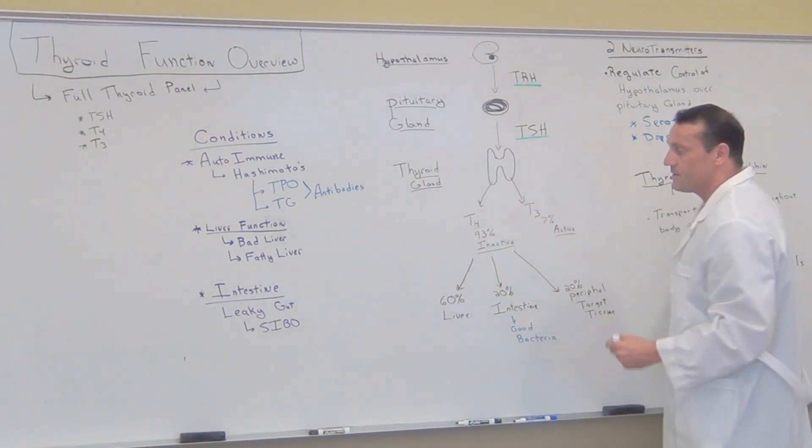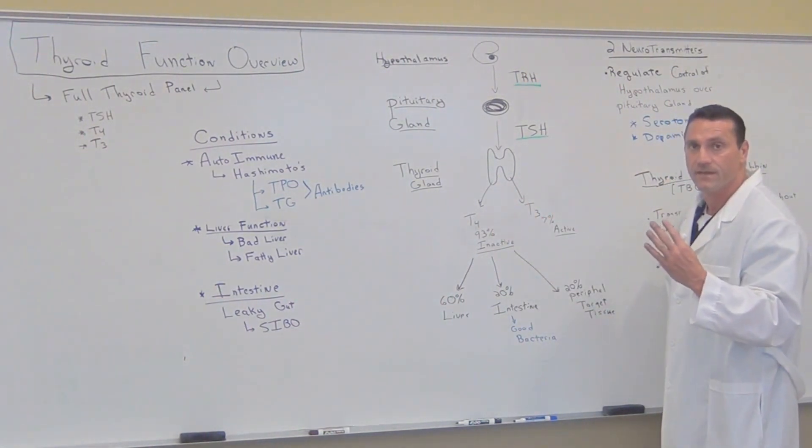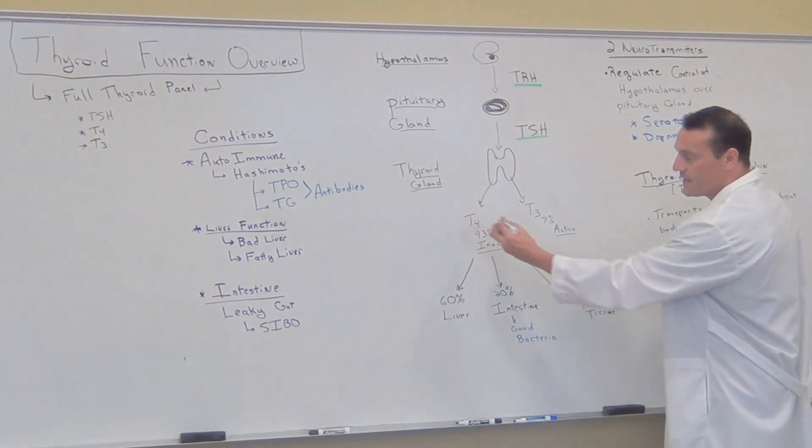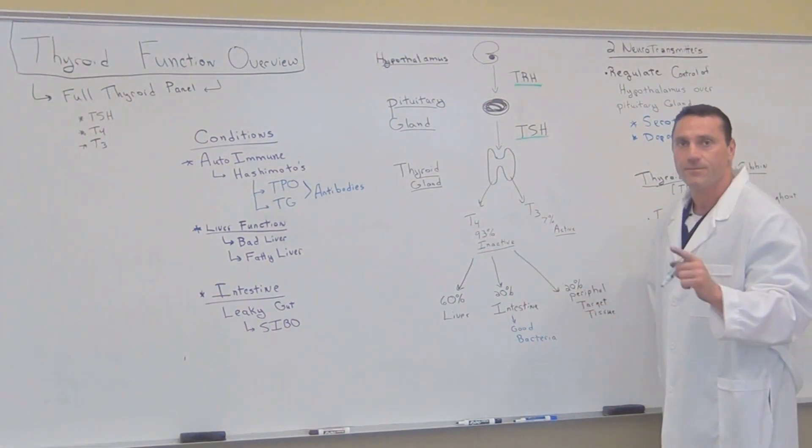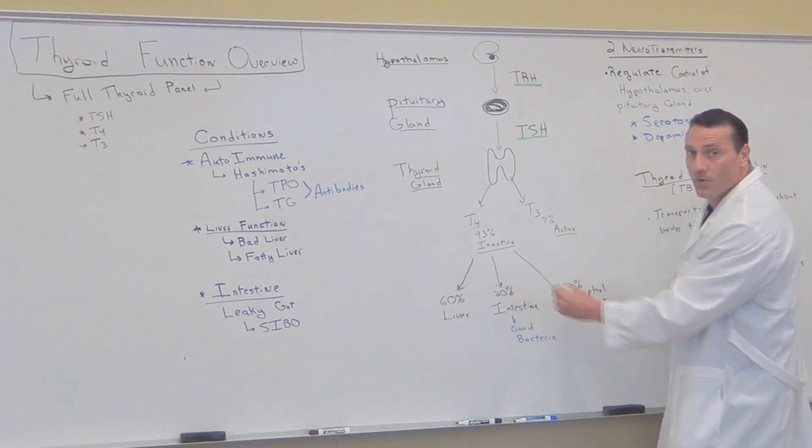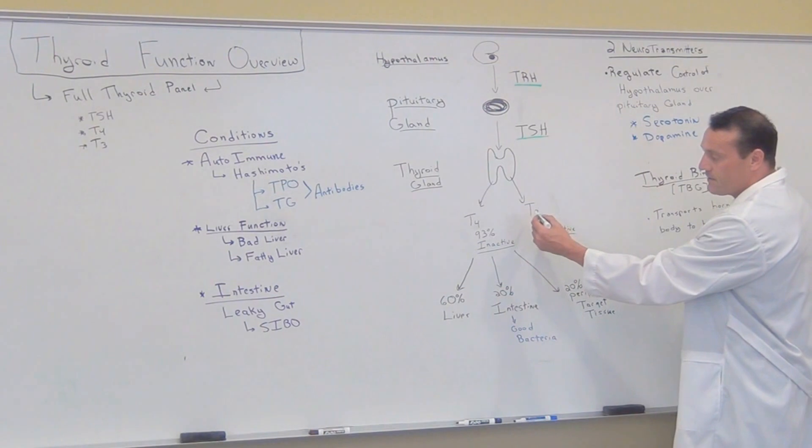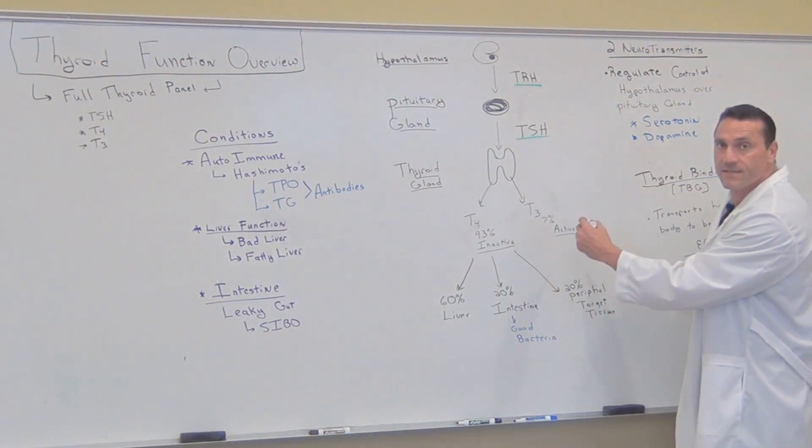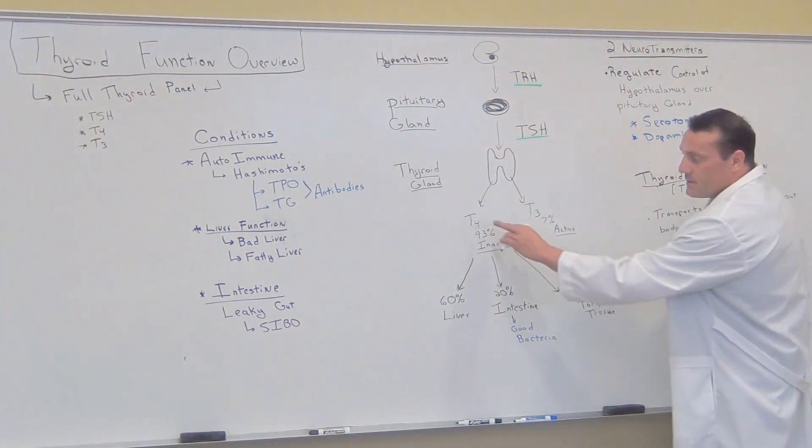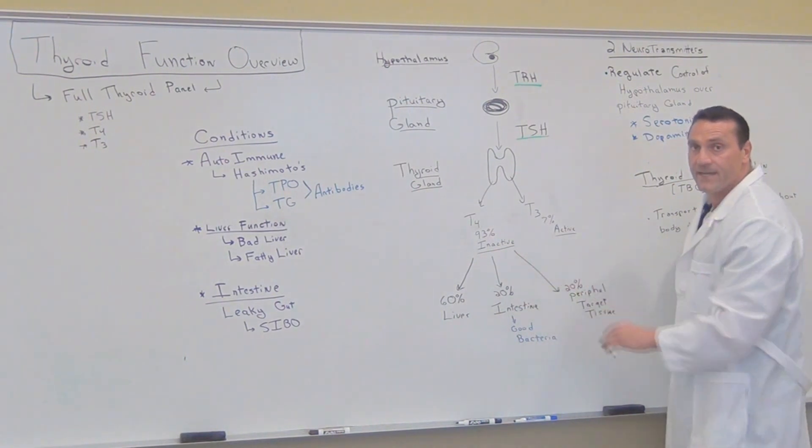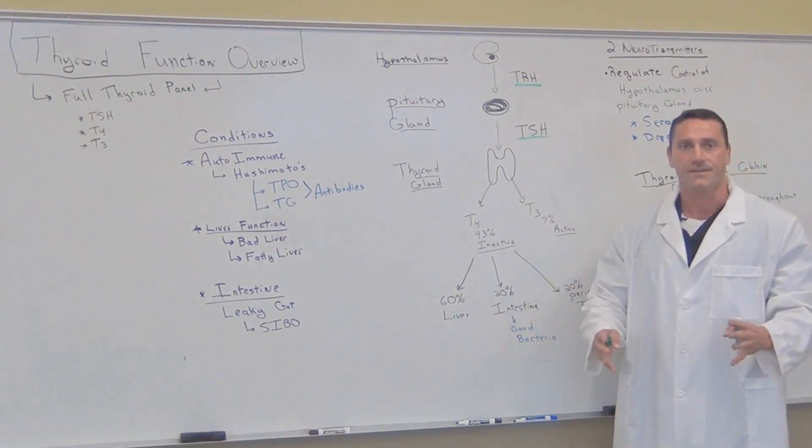Now that produces T4 and T3 thyroid hormones. Now T4, 93% of T4 is inactive. I'm sorry, only 7% of T3 is active to be utilized in the body. So T4 in active form, it has to go through a conversion process.